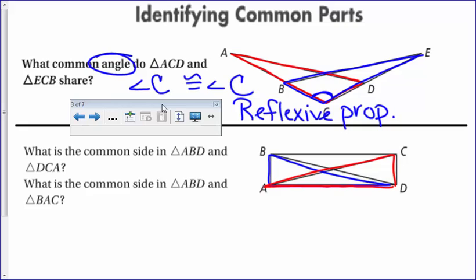So hopefully you see the side that's overlapping and side DA is the same in both triangles right here. So that would be the reflexive property in that proof. I'm going to erase this and do the second one